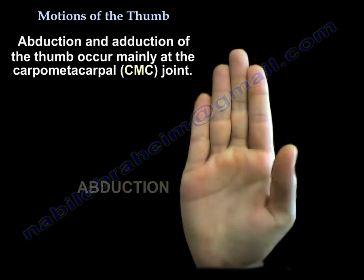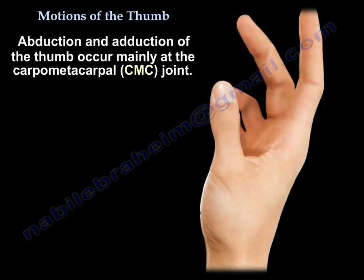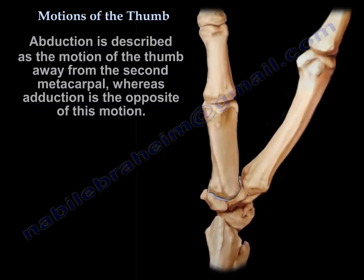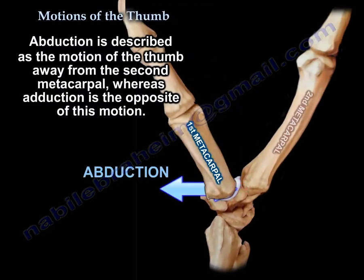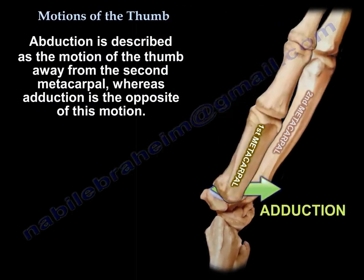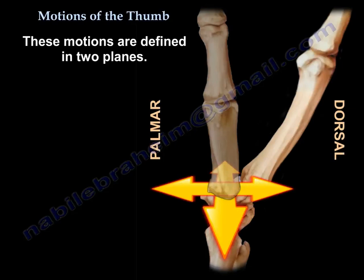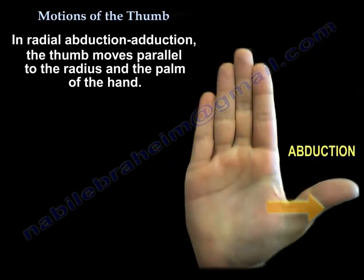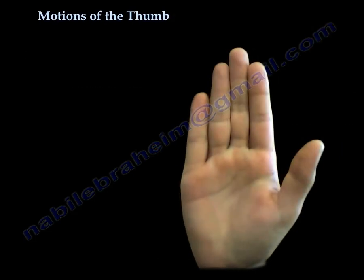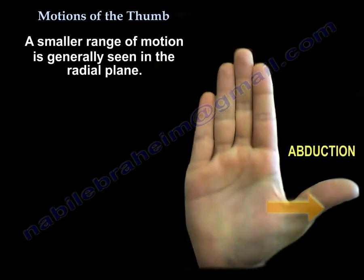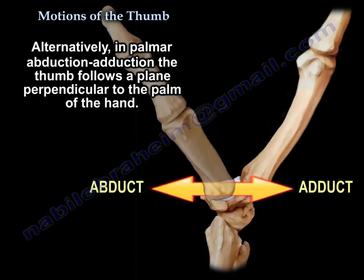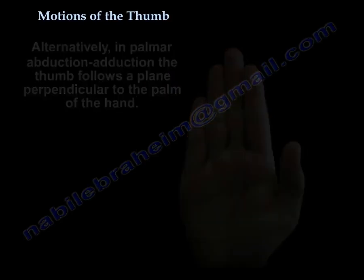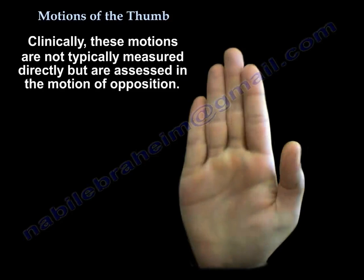Abduction and adduction of the thumb occur mainly at the carpometacarpal joint. Abduction is described as the motion of the thumb away from the second metacarpal; adduction is the opposite. These motions are defined in two planes. In radial abduction and adduction, the thumb moves parallel to the radius and the palm of the hand, with a smaller range of motion generally seen in the radial plane. Alternatively, in palmar abduction-adduction, the thumb follows a plane perpendicular to the palm. Clinically, these motions are not typically measured directly but are assessed in the motion of opposition.